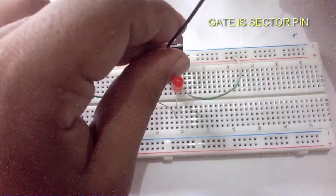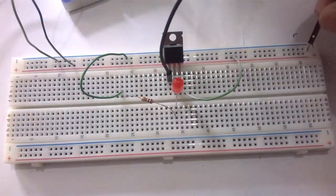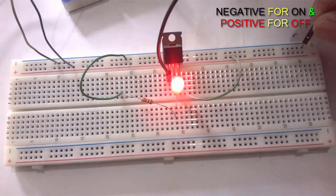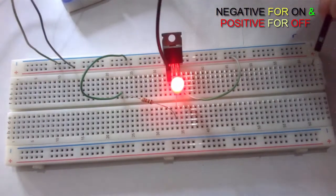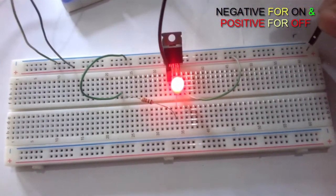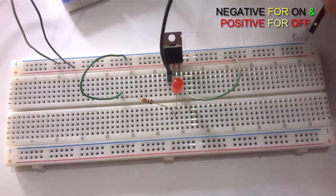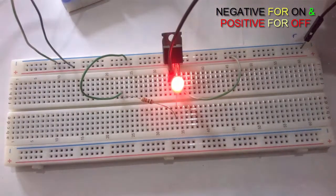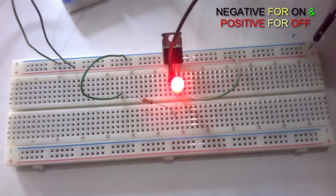As same as N-Channel MOSFET, the gate is switch for P-Channel MOSFET. To turn ON P-Channel MOSFET we need to connect gate in the negative. In higher voltage the P-Channel MOSFET is OFF. In lower voltage it becomes ON.